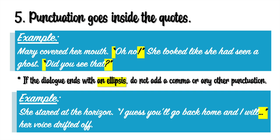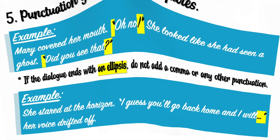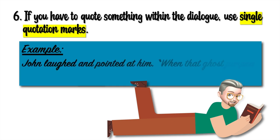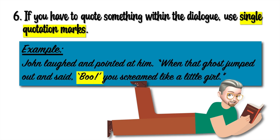Rule number six: If you have to quote something within the dialogue, use single quotation marks. Like in this example: John laughed and pointed at him. "When that ghost jumped out and said, 'Boo!' you screamed like a little girl." So 'Boo' right here uses a single quotation mark — quotation mark, Boo, exclamation mark, quotation mark.